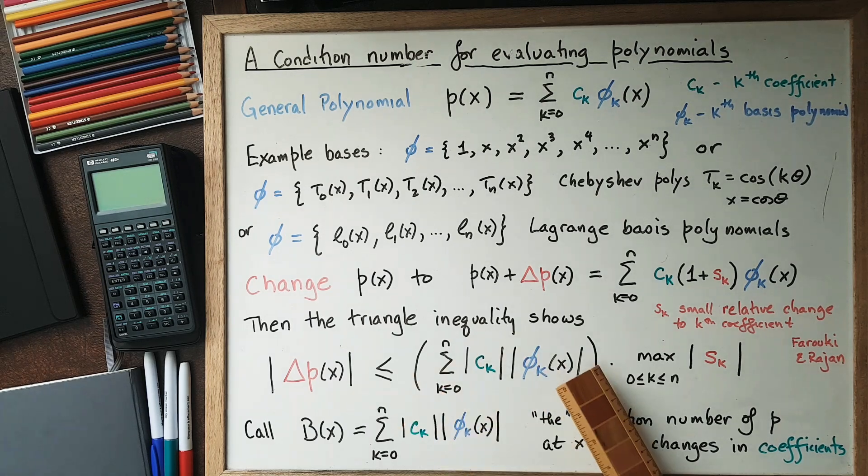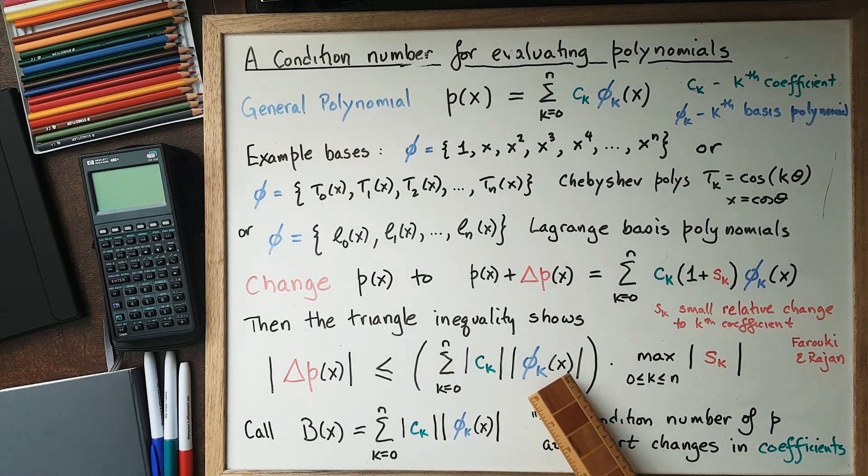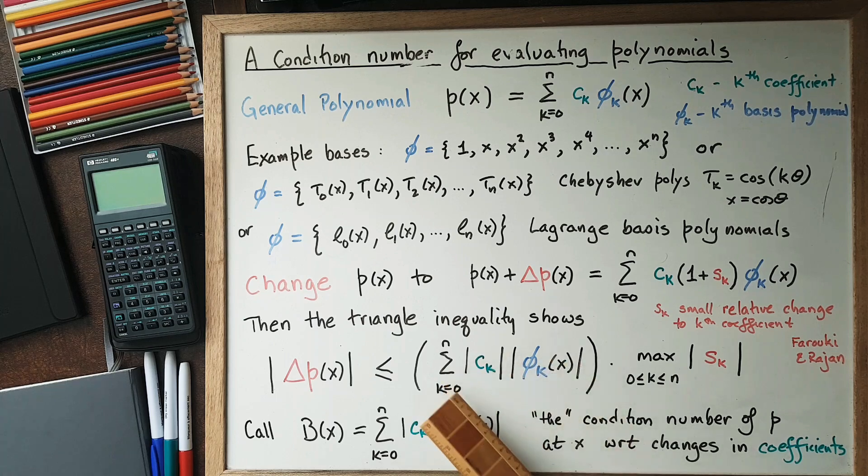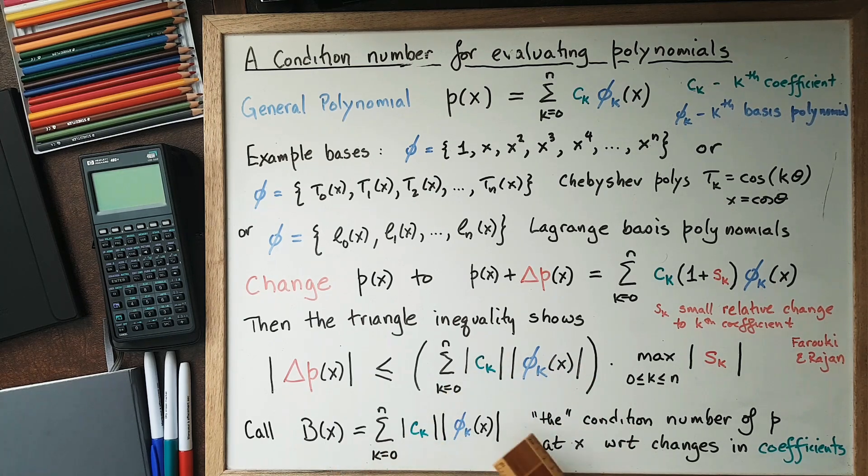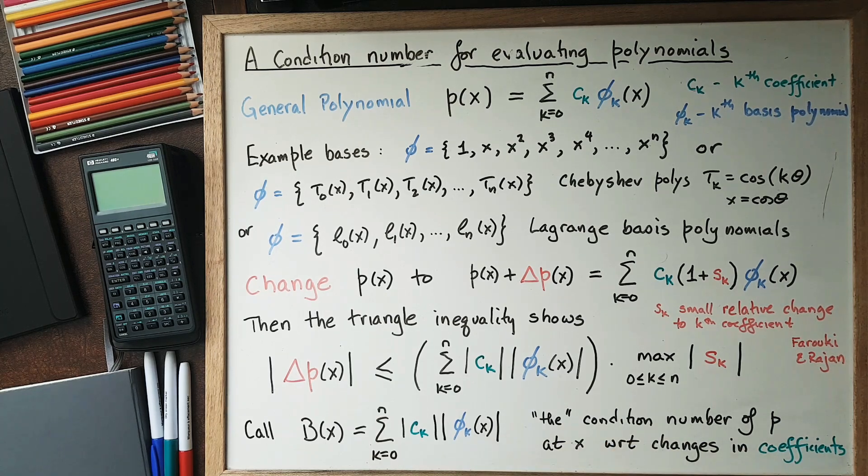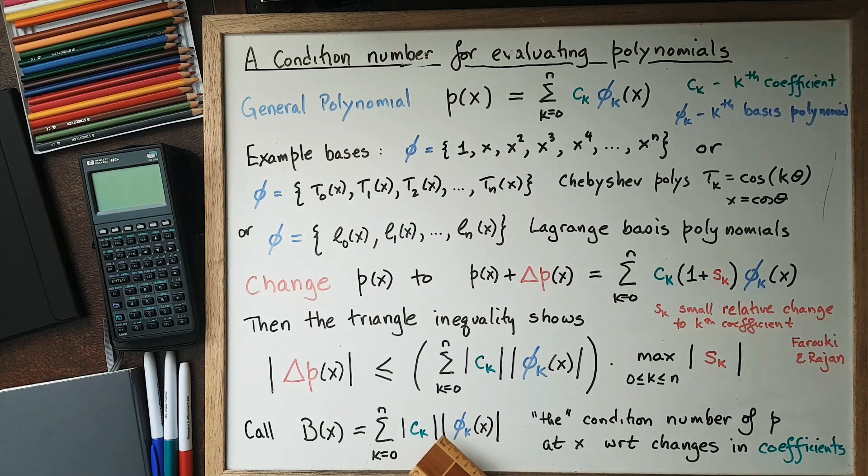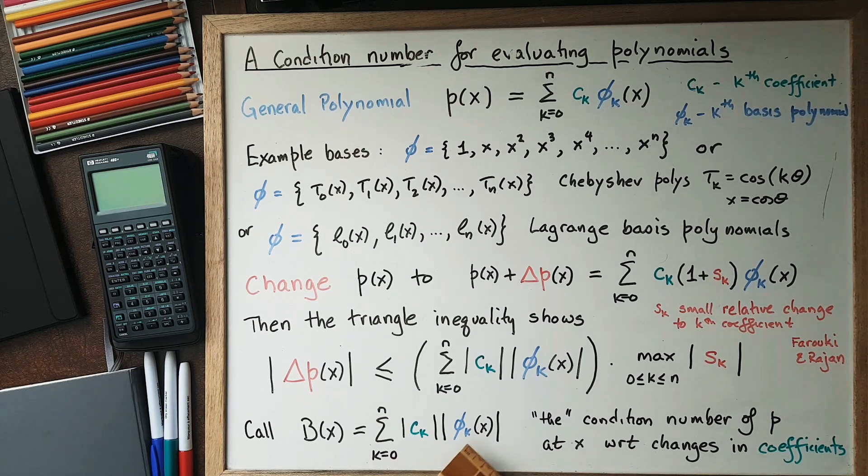So this number in brackets is a function of x, but once you fix x it's just a number. This is what I call the condition number of the polynomial p at x with respect to changes in the coefficients. If we're working in monomial basis, then this is the sum of absolute value c_0 times 1 plus absolute value c_1 times absolute value of x, and so on. That's what we'll look at as an example first.